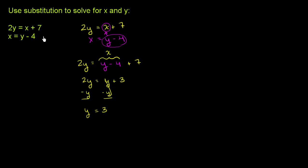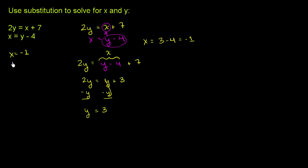Then we go back and substitute into either of these equations to solve for x — this second one is easier. x needs to be equal to y minus 4, so x is equal to 3 minus 4, which is equal to negative 1. So the solution to this system is x is equal to negative 1 and y is equal to 3. You can verify that it works in the top equation: 2 times 3 is 6, which is indeed equal to negative 1 plus 7.